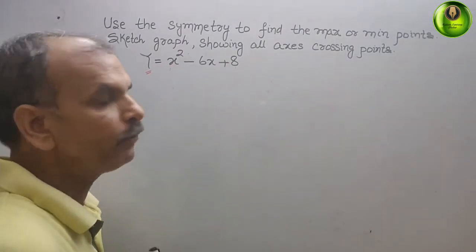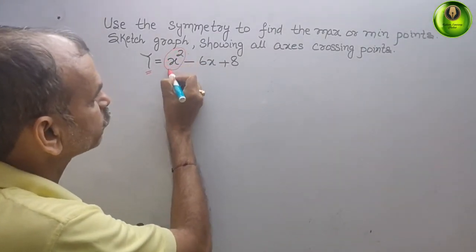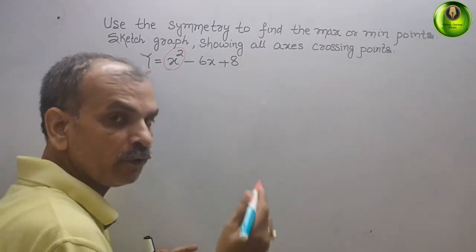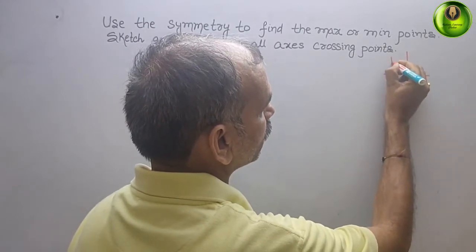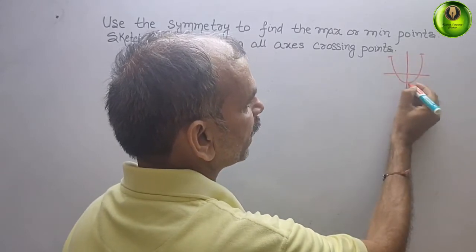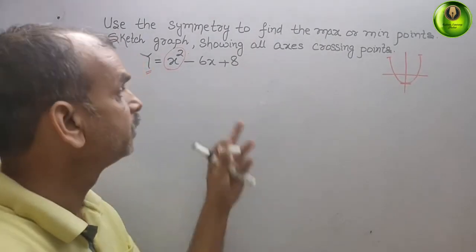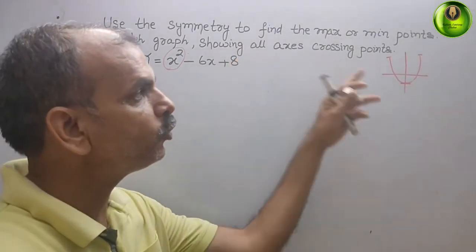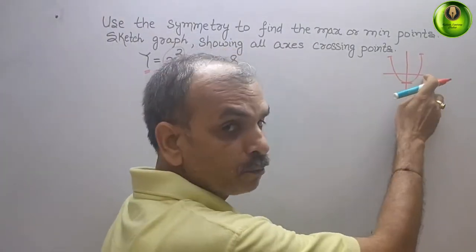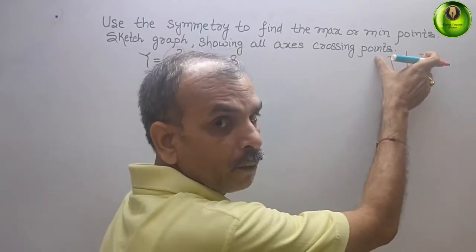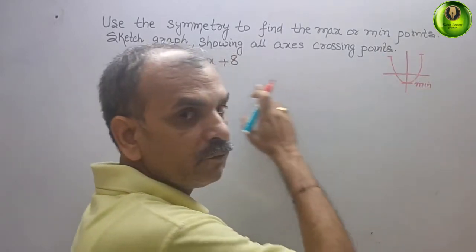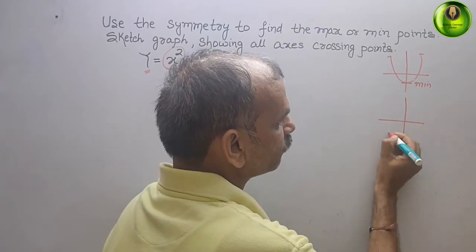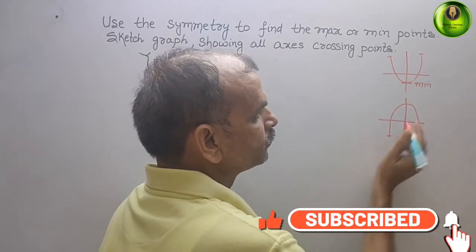If you see the quadratic equation, x squared whose coefficient is positive, you will get a minimum point. That means you will get a graph like this. Where x squared's coefficient is positive, you get a minimum point — it is below zero. If the coefficient is negative, that means minus x squared, you will get the graph going downward, and that gives you a maximum point.